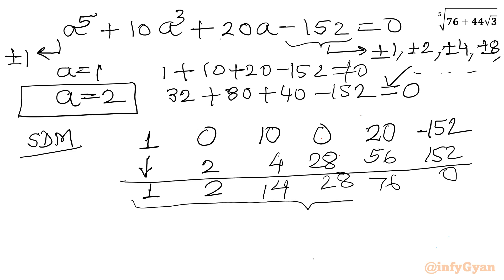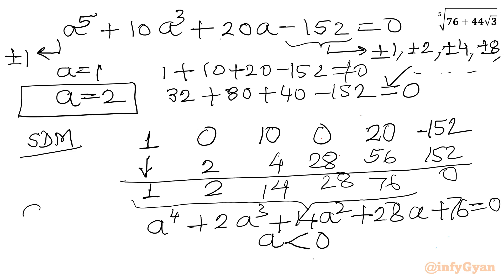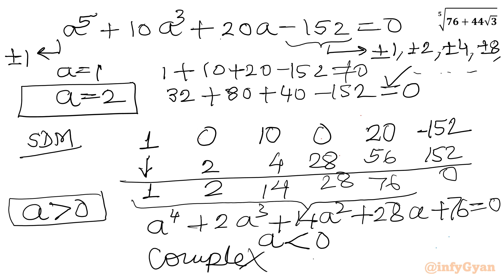So the coefficients for the remaining quartic equation are: a power 4 plus 2a cubed plus 14a squared plus 28a plus 76 equals 0. As we can see, all the coefficients of this quartic equation are positive, so none of the real positive values will satisfy this. The conclusion is that a would have to be negative, but our condition on a was that a should always be greater than 0. That means solving the quartic will only yield complex solutions, which are rejected.